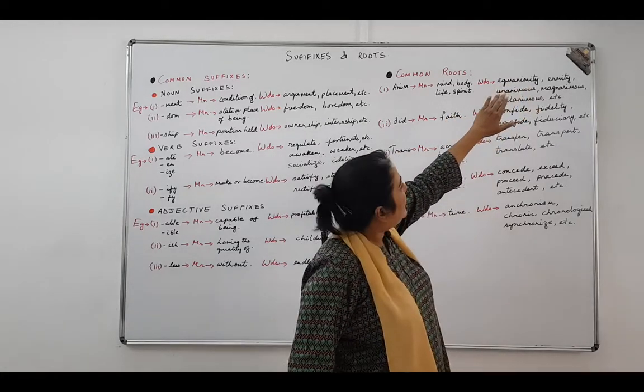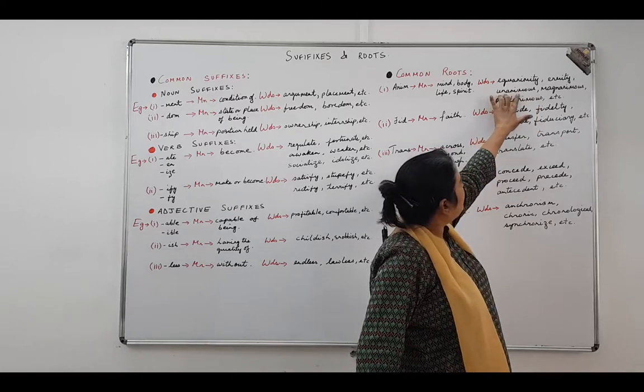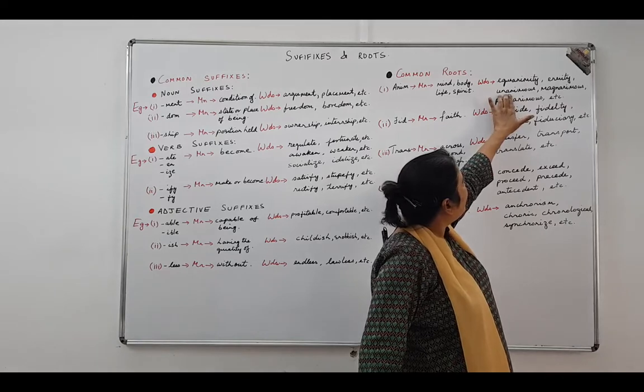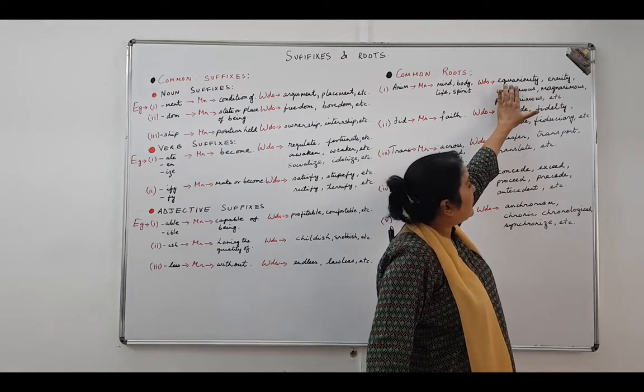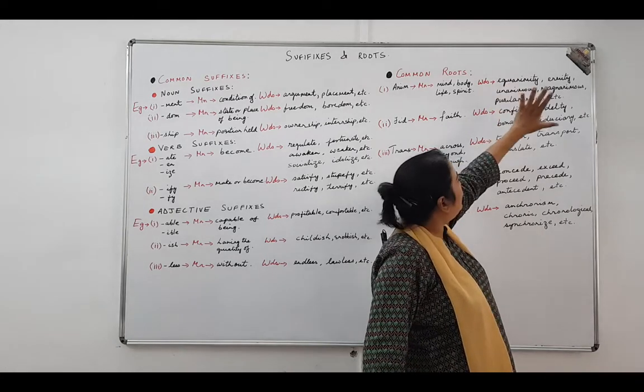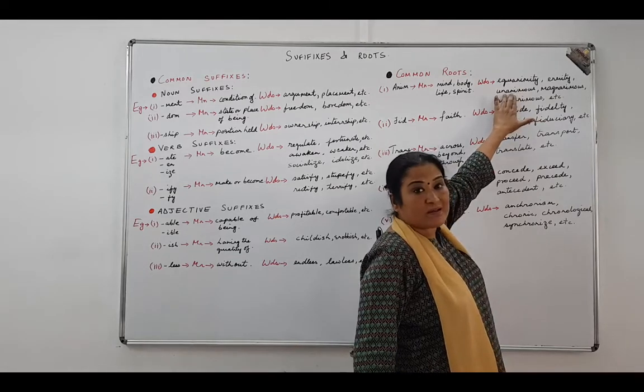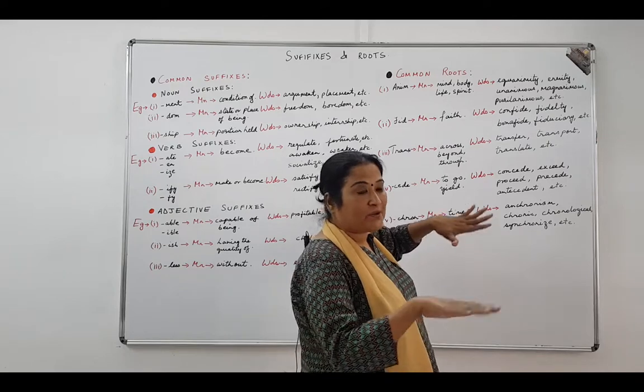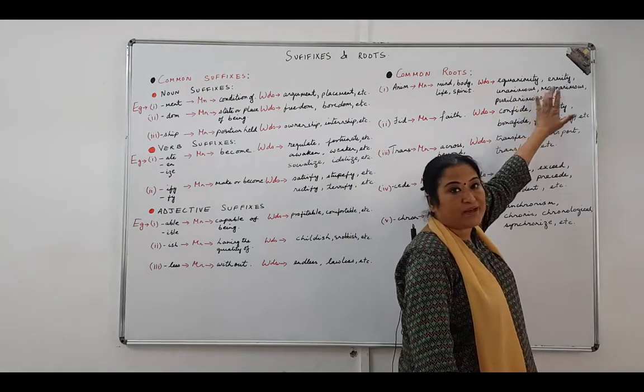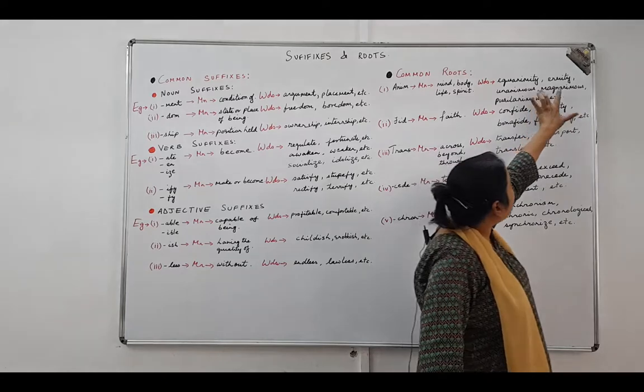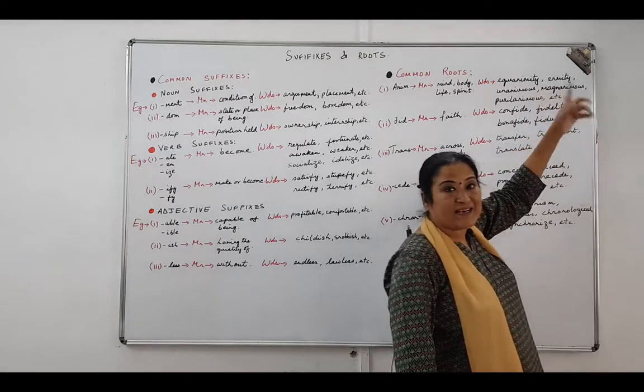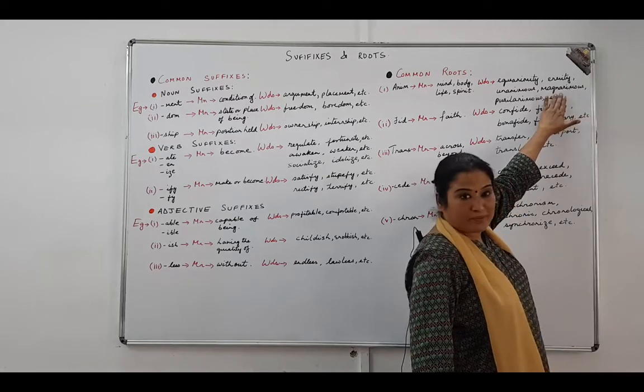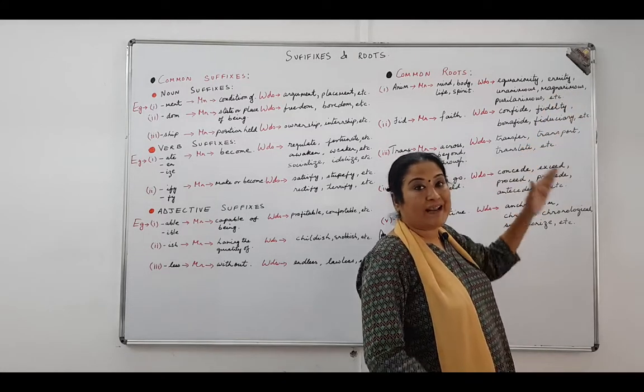Equanimity, enmity, unanimous. Unanimous means of equal minds. Sorry, equanimity means of equal minds. Unanimous is without dispute, of the same mind. Magnanimous is made up of two words. Magna, the first part, means great, and animous in the second part makes it of great minds.